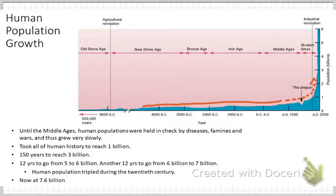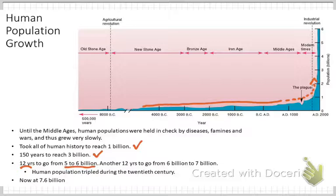One way to see how quickly this happens is to look at how fast we gain an additional billion individuals. It took obviously a very long time to hit one billion, then about 150 years to reach three billion. But after that, it only took about 12 years to go from five to six billion, and then another 12 years from six billion to seven billion. So it's happened rather quickly.